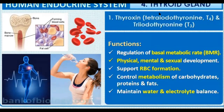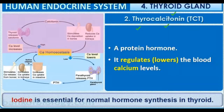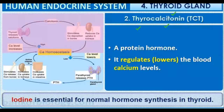The T3 hormone is known as triiodothyronine and the T4 hormone is tetraiodothyronine. These two hormones need iodine for their regulation. Next is thyrocalcitonin, whose function is to lower the blood calcium level.